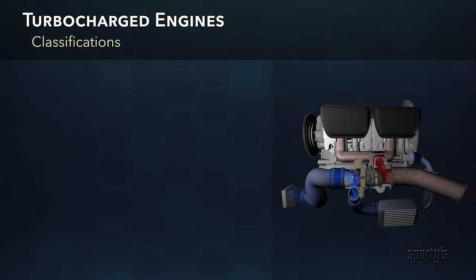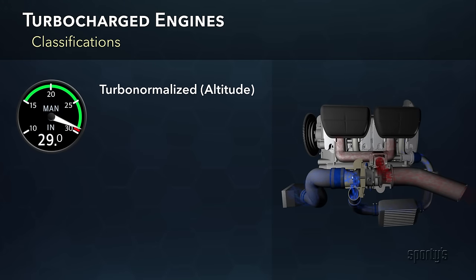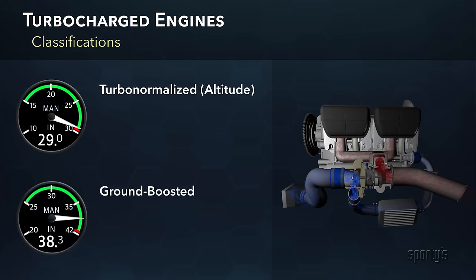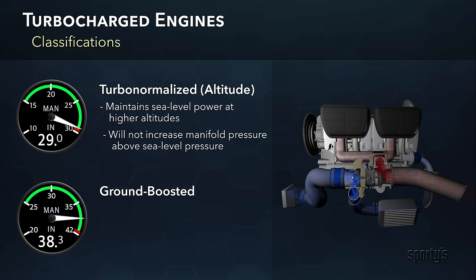Turbocharged engines are further classified as either turbo-normalized or ground-boosted. The altitude engine, or what is also called normalized, uses the turbocharger to ensure a constant sea-level power is maintained even at higher altitudes. It will not increase engine manifold pressure above sea-level power.